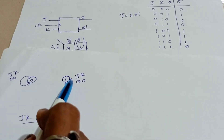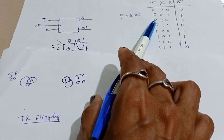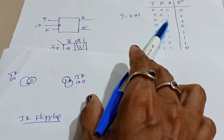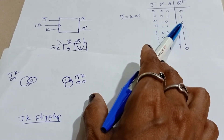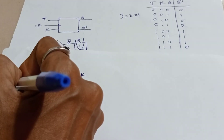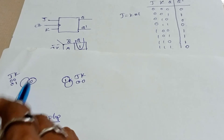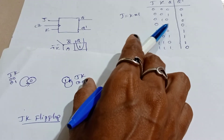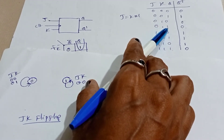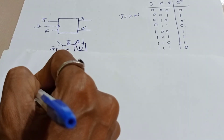When J equals 0 and K equals 1: from state 0, it is in the same state (JK = 01 stays at 0). From state 1, JK = 01 is changing from state 1 to state 0.